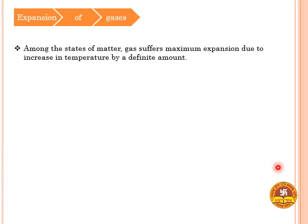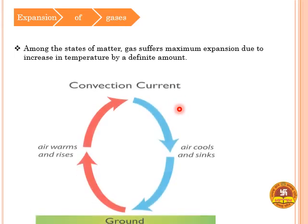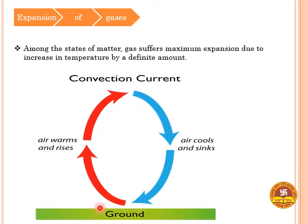Regarding expansion of gases: among all states of matter, gas suffers maximum expansion due to a given increase in temperature. A simple example is the air near the earth's surface — it gets heated by the sun, its temperature increases, density decreases, it becomes lighter and moves upward. At higher altitudes temperature is lower, so it cools, density increases, it becomes heavier and sinks. This cyclic process forms convection currents.